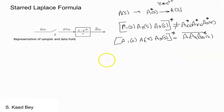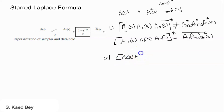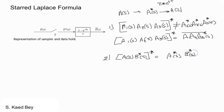It is also worth noting a second case: if I have a function A in the s-domain multiplied by B-star of s, and all of these are starred, then the answer will be A-star of s times B-star of s. Please remember these rules — they will be very handy later when we deal with the pulse transfer function for closed-loop systems.